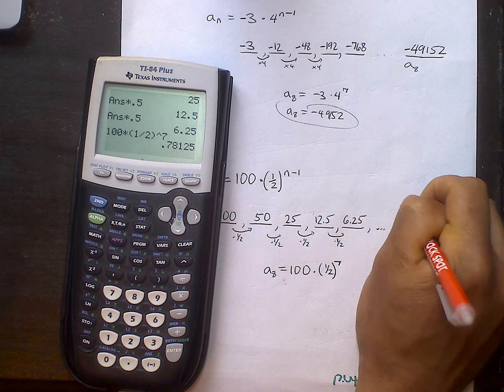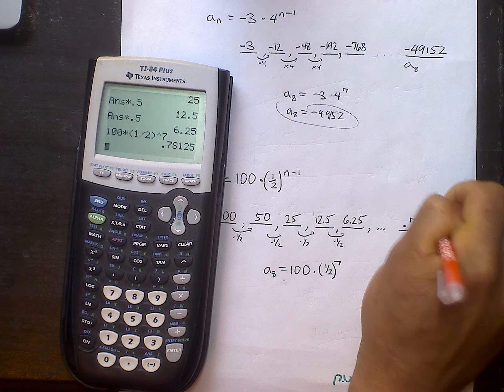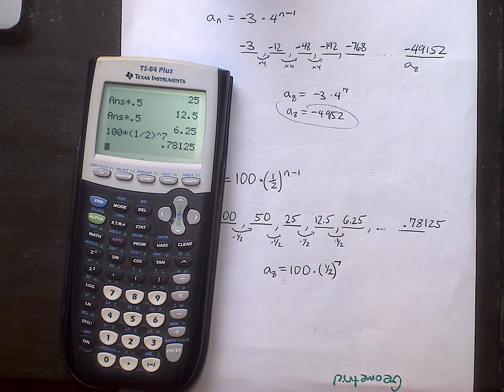Much smaller because it is decaying. 0.78125. Very similar to the exponential unit that we just completed.